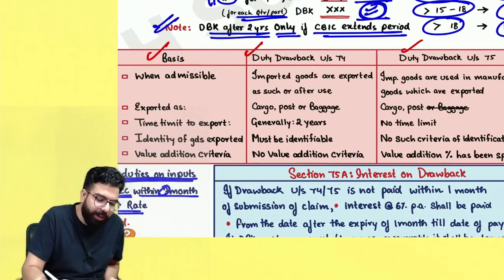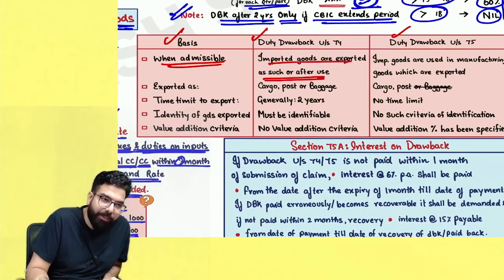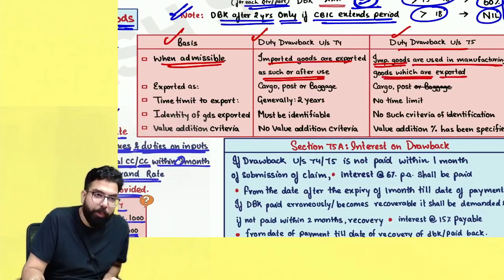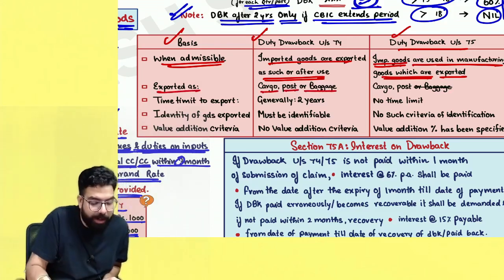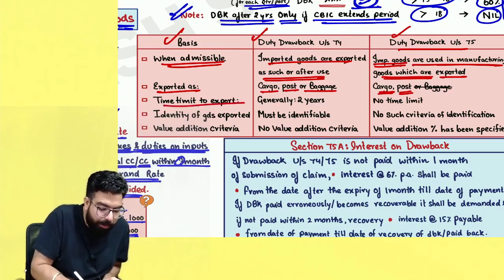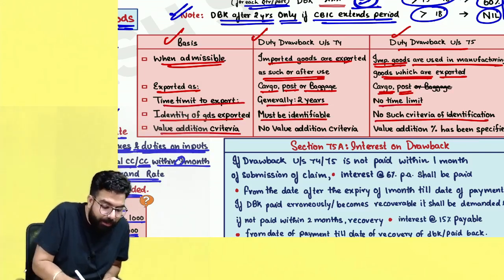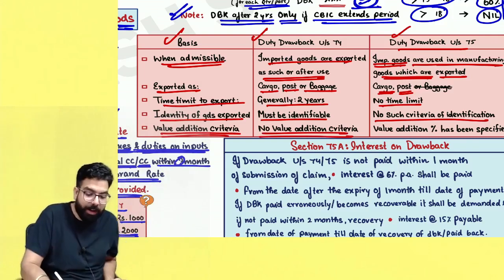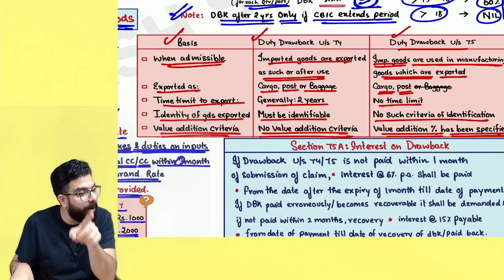Comparison between section 74 and section 75: Section 74 — imported goods exported as such or after use; can be exported as cargo, post, or baggage; time limit 2 years; identification can be done by AC/DC; no value addition criteria. Section 75 — imported goods used in manufacturing and then exported; exported as cargo or post only (baggage not allowed); no time limit; no identification criteria; value addition criteria is mandatory and must be exceeded.